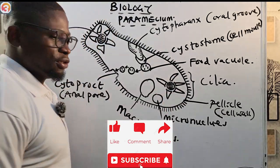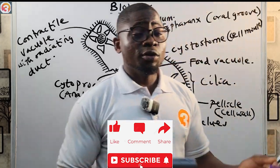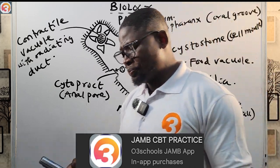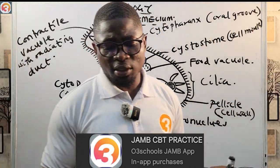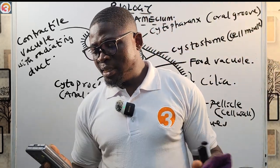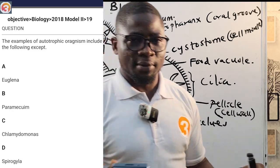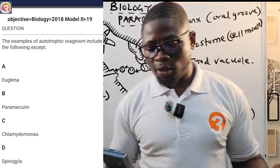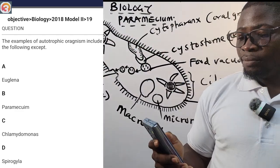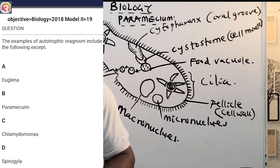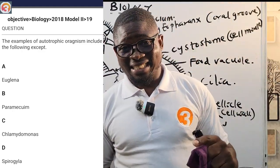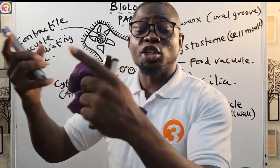This tutorial is brought to you by the O3 School Jam app. Let's look at a question from the app concerning paramecium — this is a 2018 question number 19. It says: the examples of autotrophic organisms include the following except: A) Euglena, B) Paramecium, C) Chlamydomonas, D) Spirogyra. We'll come back to this question after the class.